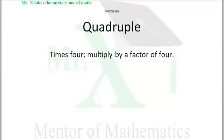One way to do this is to double and then double again. Double something and then double that new thing again. It's the same as multiplying your original by four.